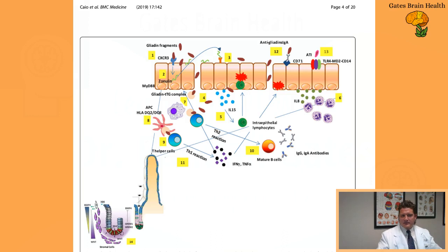And then the gliadin molecule comes into the bloodstream and it can really trigger the immune system, creating a host of downstream consequences, as you can see here, between innate and adaptive immunity, whereby then the immune system gets really turned on to make antibodies like tissue transglutaminase and gliadin antibodies and endomysial antibodies.